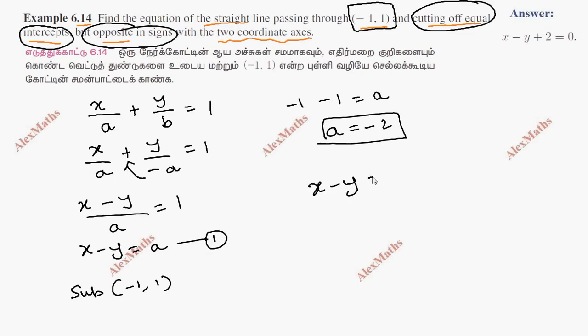So x minus y equals -2. We can write this as x minus y plus 2 equals 0.